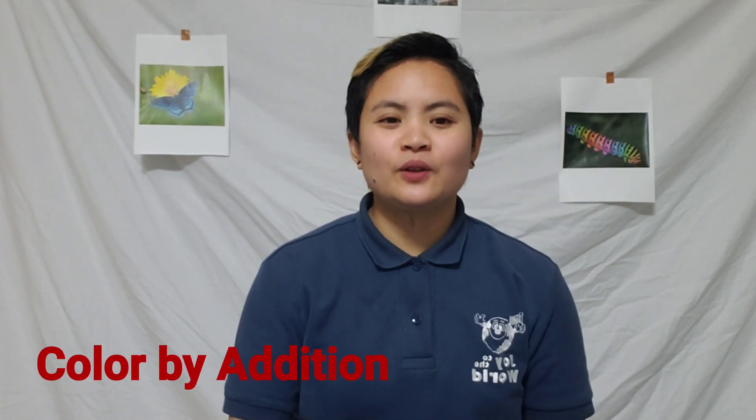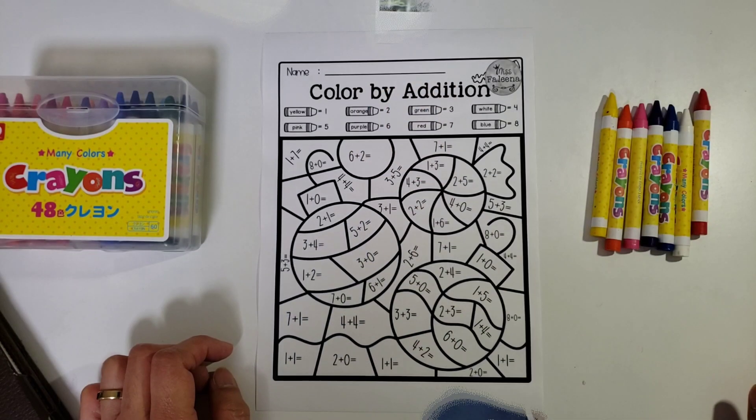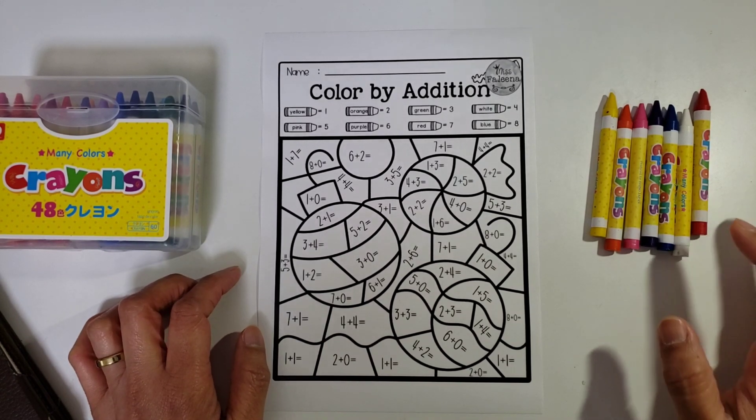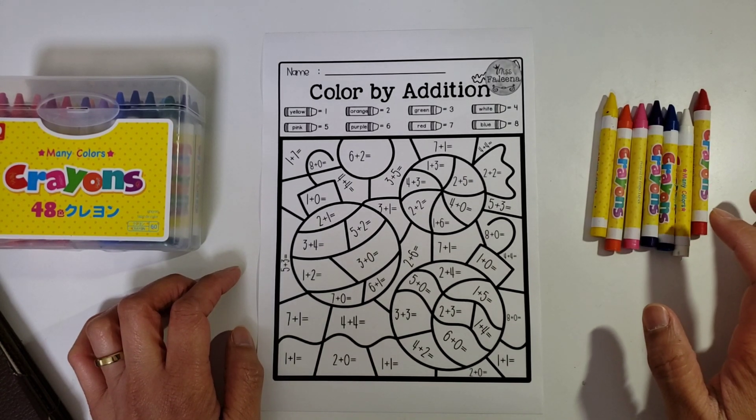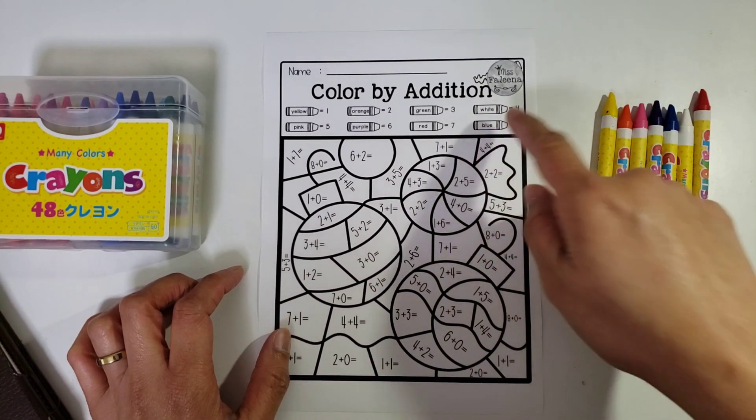Hello everyone, today I'm going to show you or teach you how to color by addition. But first we need to have a template and a crayon. For this one, you are going to add the set of activities below. After getting the answer, color it by the corresponding answers.